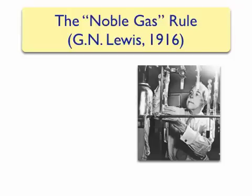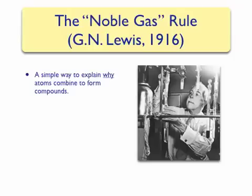We've noticed that elements within the same groups have very similar electron configurations for their valence electrons, and this causes them to have very similar reactivity. In Chapter 9, we will take this further and discuss a very simple way to explain why atoms combine to form compounds.